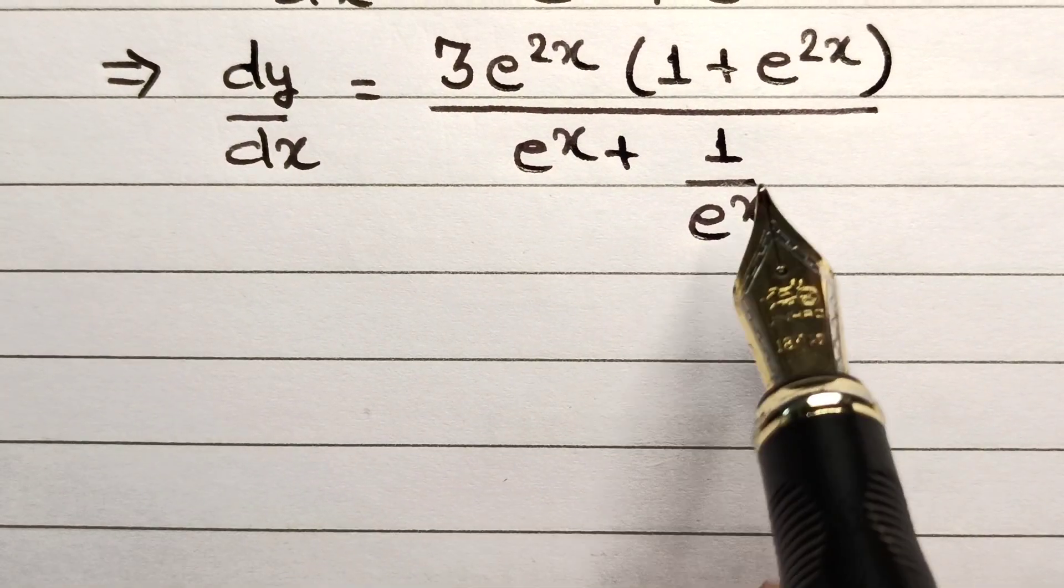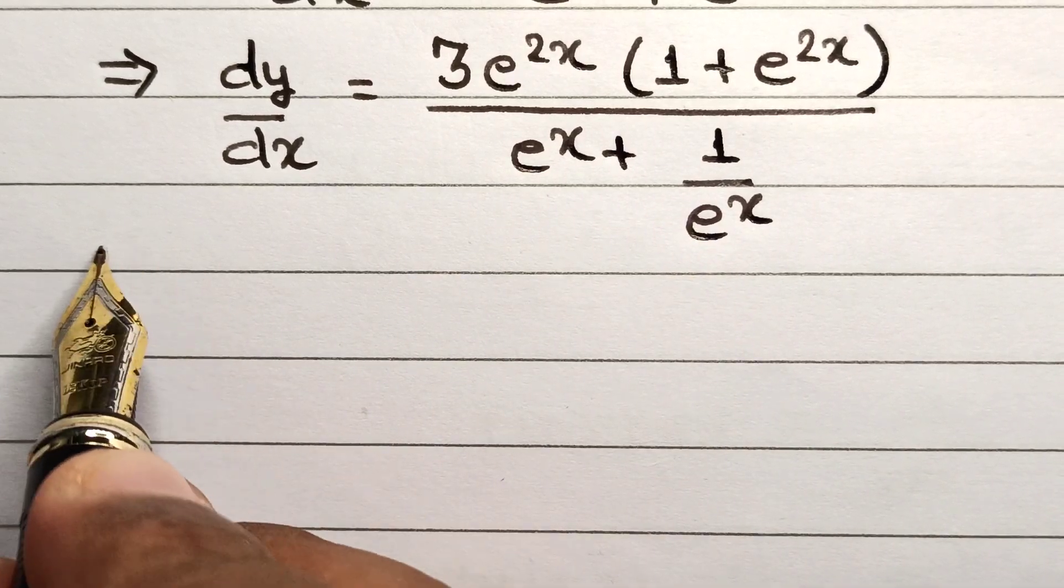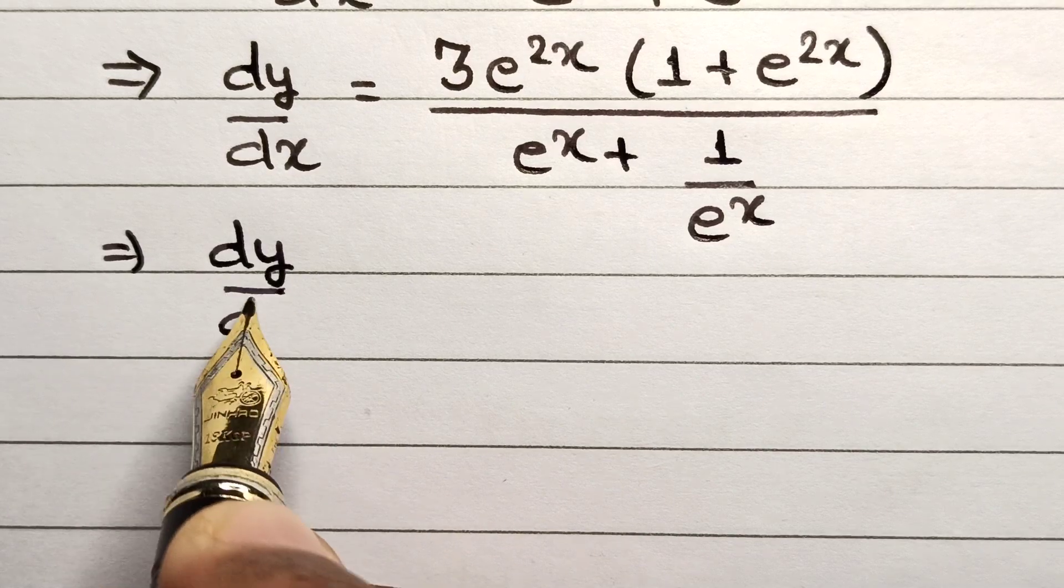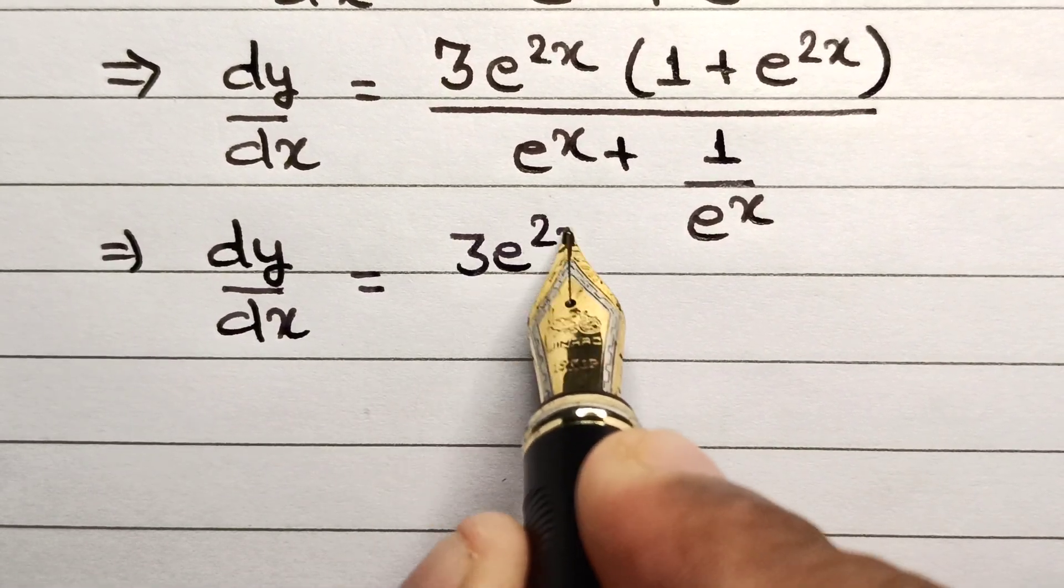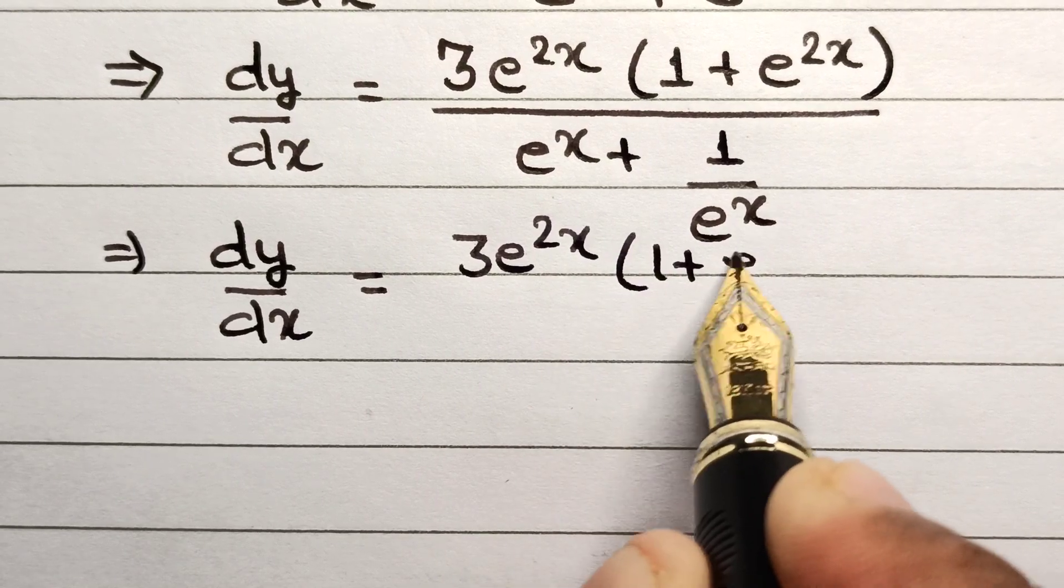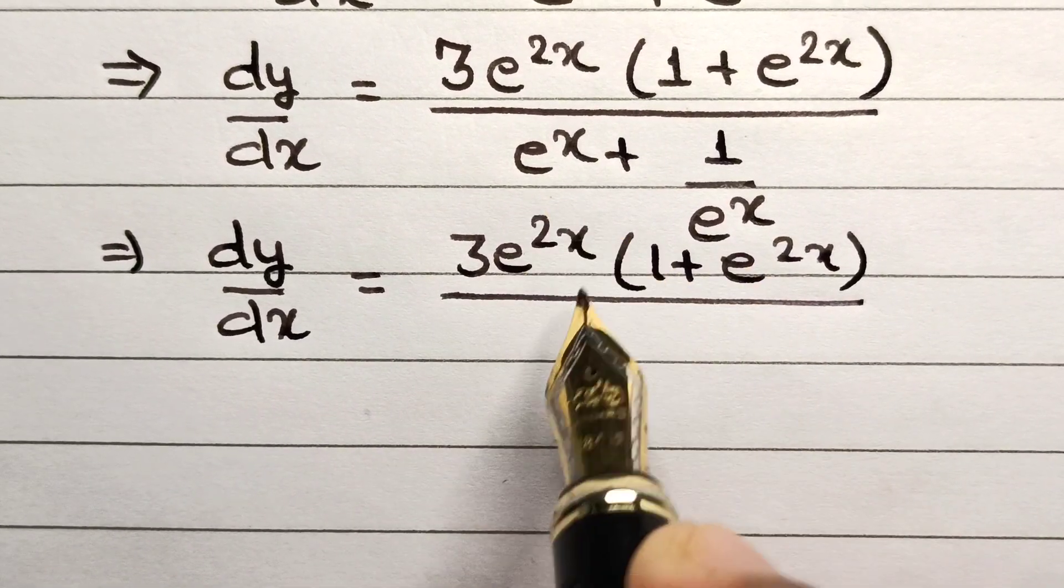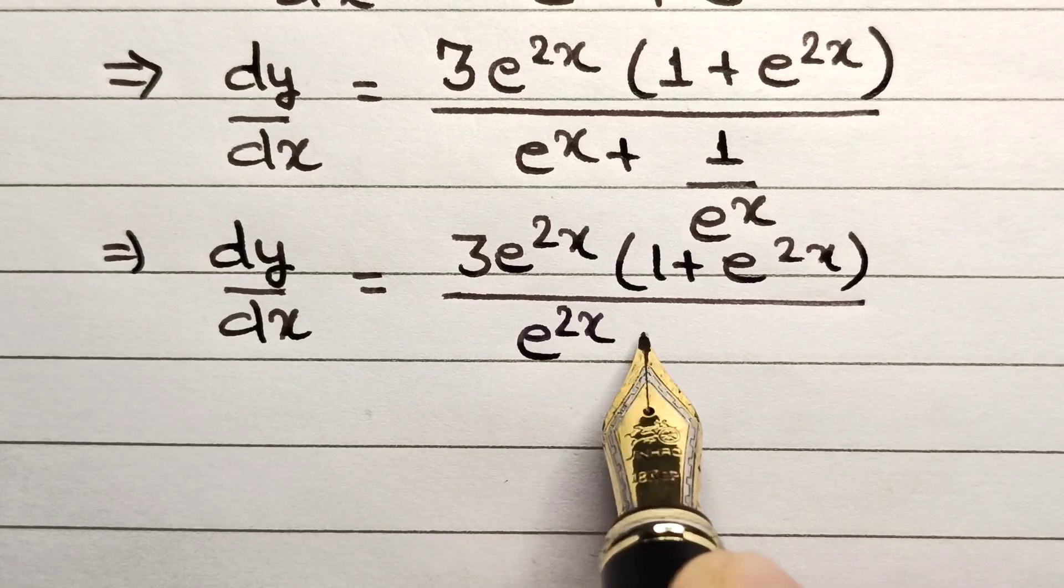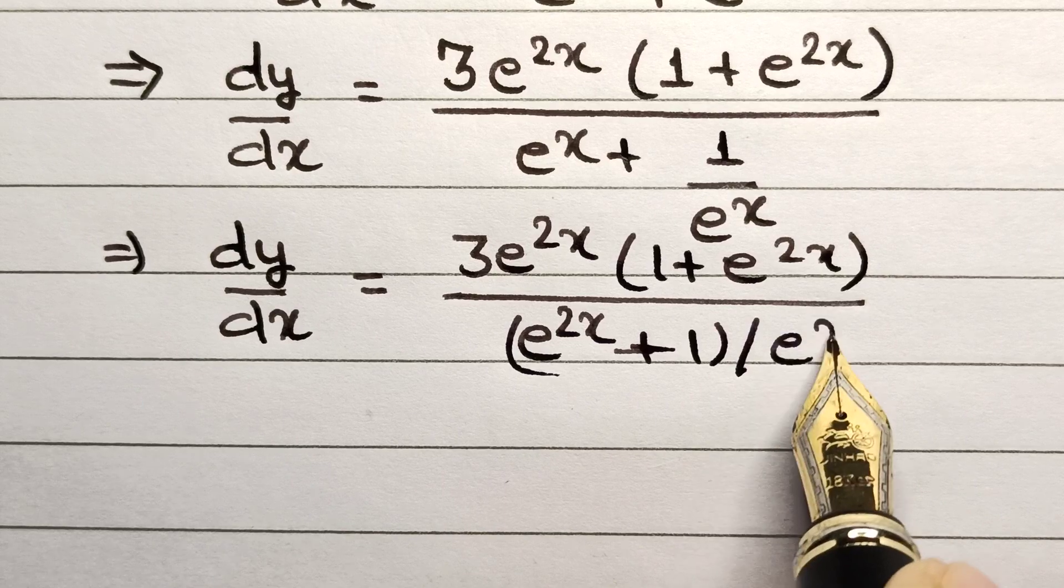After this particular step, we will take the LCM of the denominator. This implies that dy/dx will now equal 3e^(2x) multiplied by 1 plus e^(2x), divided by—on taking the LCM—e^(2x) plus 1, divided by e^x.